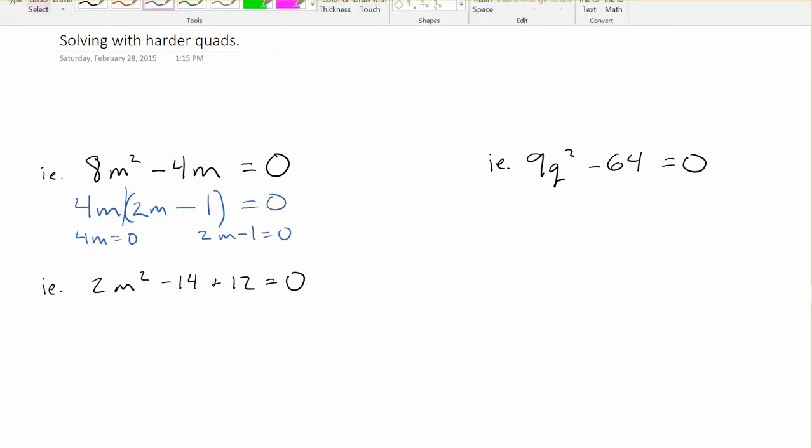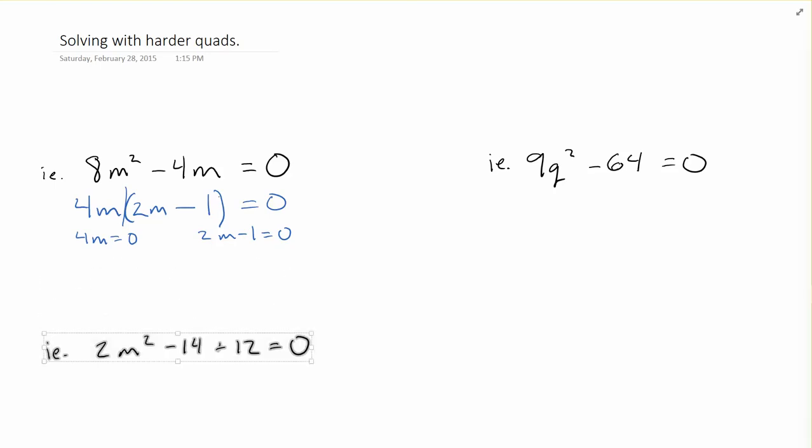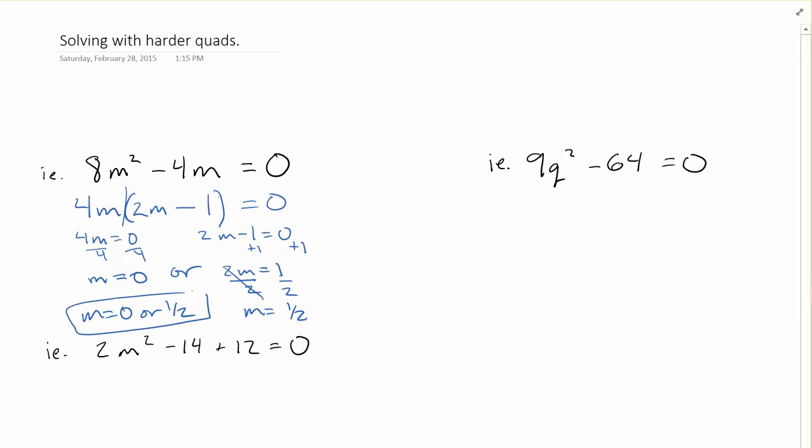If I was going to solve for this, I need to divide by 4 on both sides, so my answer here is equal to zero. And over here, I'll plus by 1, 2m is equal to 1, then divide by 2, m is equal to one half. So I've got m is equal to zero or one half. Remember, with quadratics, you usually get two solutions.